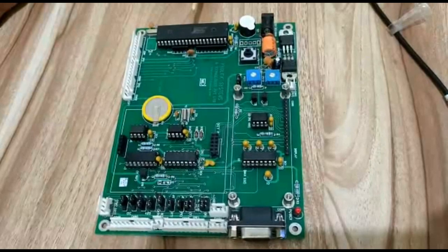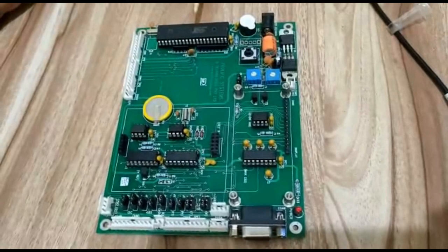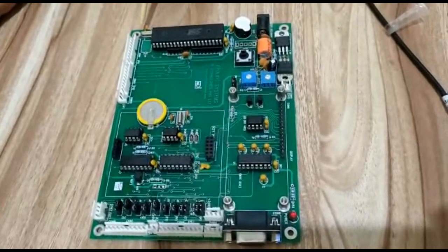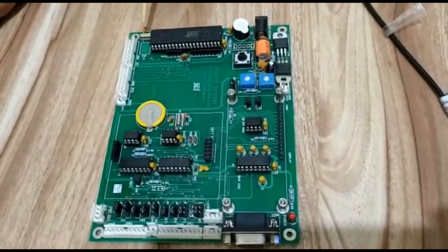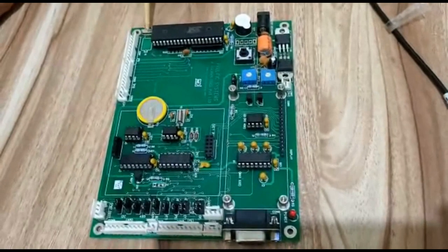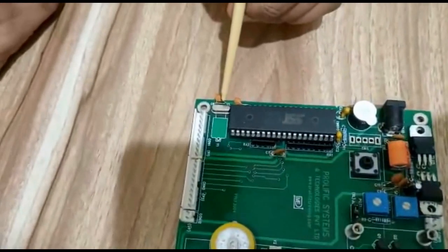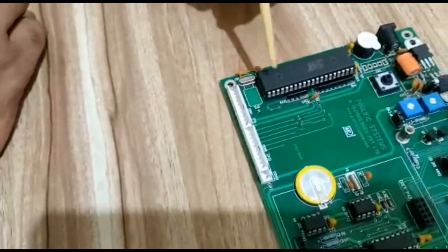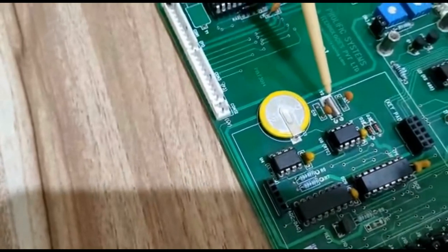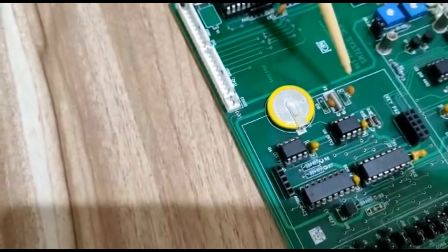Hello friends, today we will learn how to check the operation of crystal and its operating frequency. We have onboard two crystals: here is one crystal that is 11.05 MHz and here we have another crystal that is 32.768 kHz.